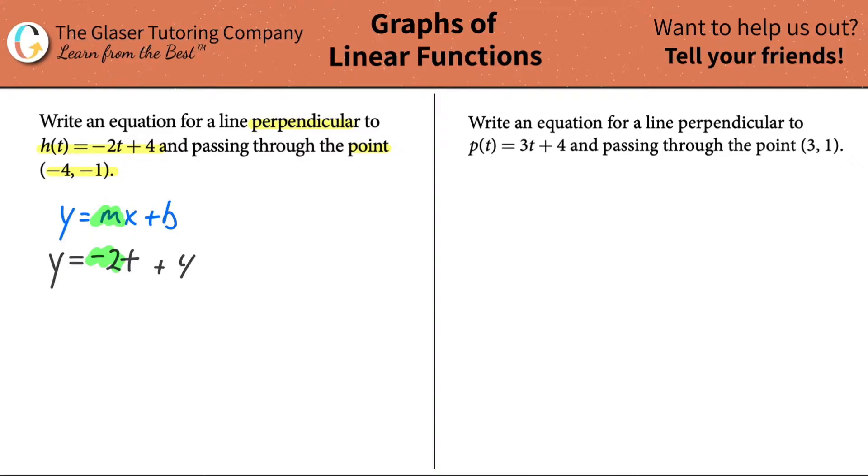I have to create a new equation that has to be perpendicular to the given equation. Remember, the slopes of perpendicular lines are negative reciprocals or opposite reciprocals of one another. That means if you know the slope of this line is -2, what is the opposite or negative reciprocal then of 2?